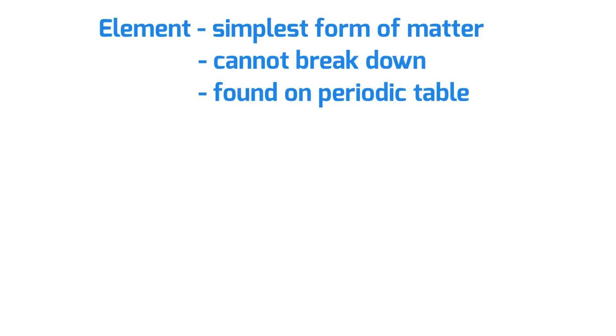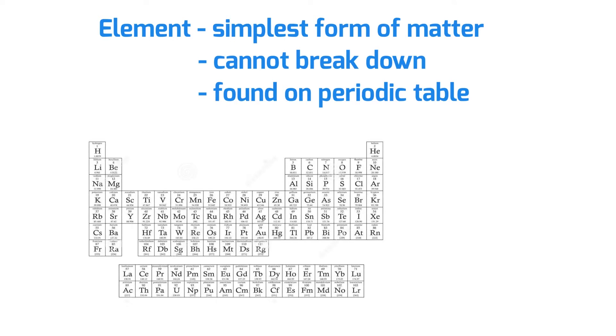An element, the definition of an element, is it's the simplest form of matter. They cannot be broken down into smaller components and we find them arranged in the periodic table. If I flash up the periodic table, as you can see here, all of those symbols represent elements.